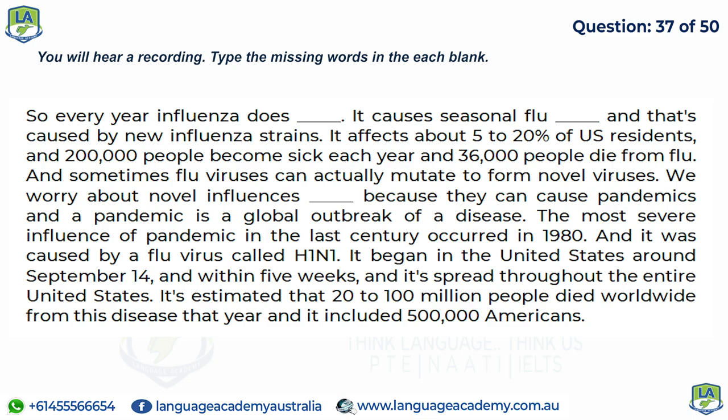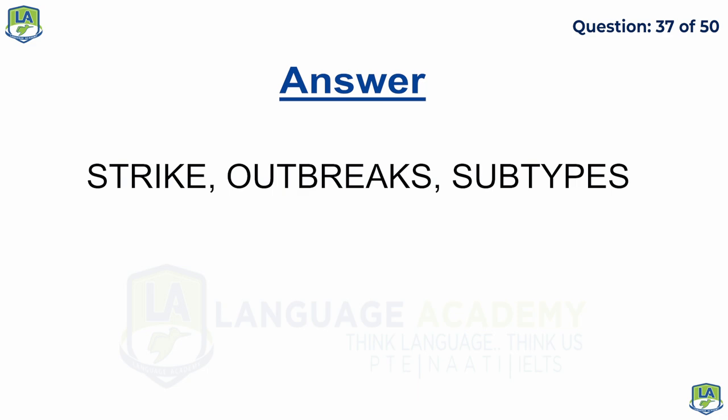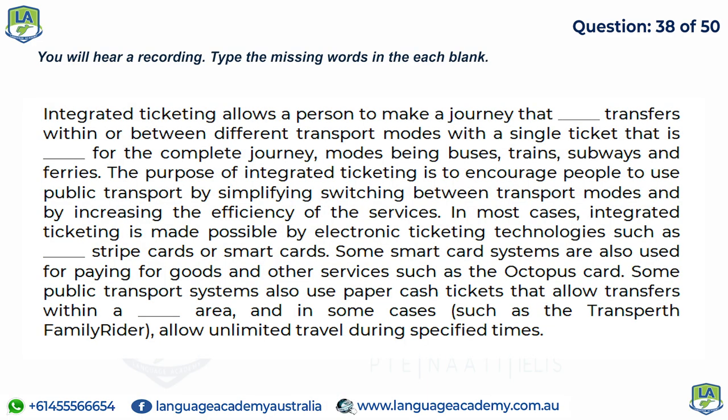Integrated ticketing allows a person to make a journey involving transfers within or between different transport modes with a single ticket valid for the complete journey — modes being buses, trains, subways, and ferries. The purpose of integrated ticketing is to encourage people to use public transport by simplifying switching between modes and increasing efficiency. In most cases, integrated ticketing is made possible by electronic technologies such as magnetic stripe cards or smart cards. Some smart card systems are also used for paying for goods and other services, such as the Octopus card, and some systems allow unlimited travel during specified times.